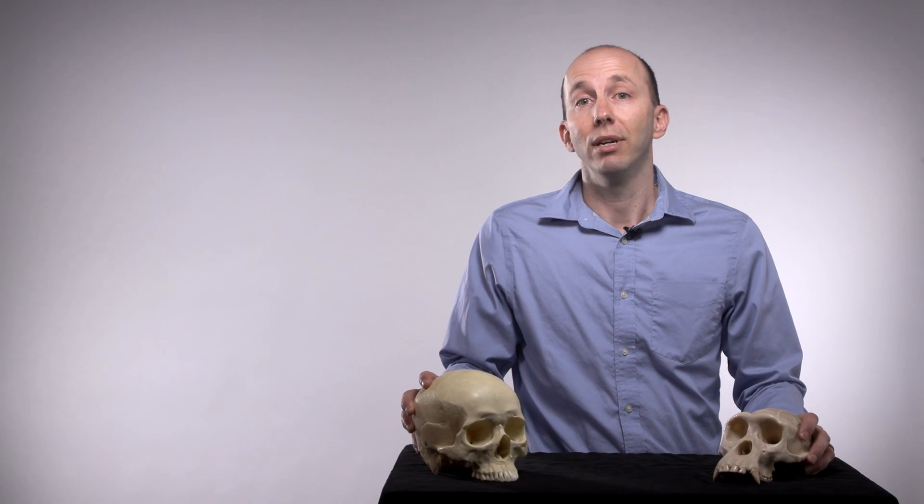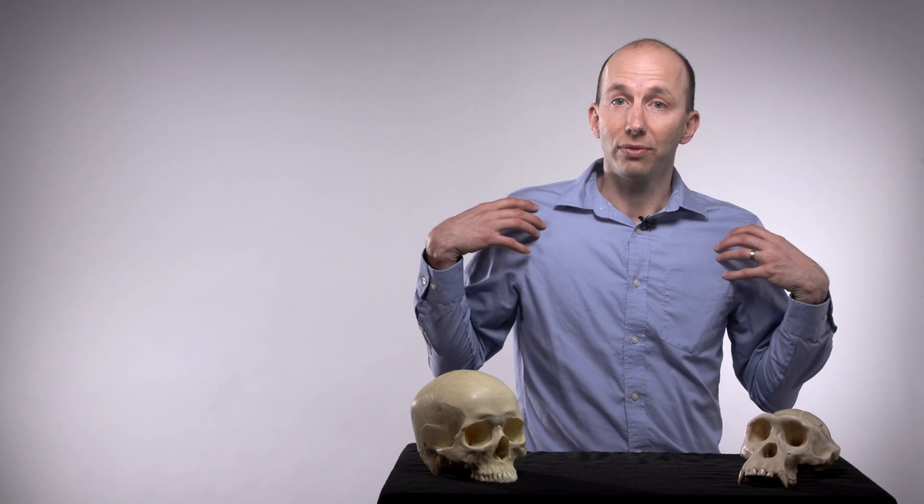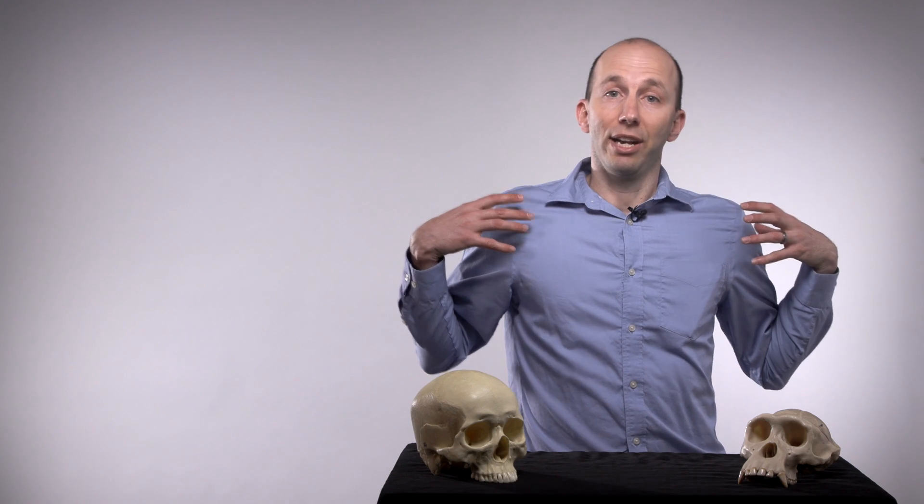Within the primates, we're a member of the ape group. And so apes include chimpanzees like the skull here, bonobos, gorillas, orangutans, and gibbons. And we can tell that we're apes because the way our bodies are shaped today. So our shoulders, for example, stick out to the side and our arms can reach up above our heads, just like our ape relatives can when they're hanging from branches in their trees. We don't have tails, just like none of the other apes have tails. And of course, our DNA is over 98% similar to living apes today.